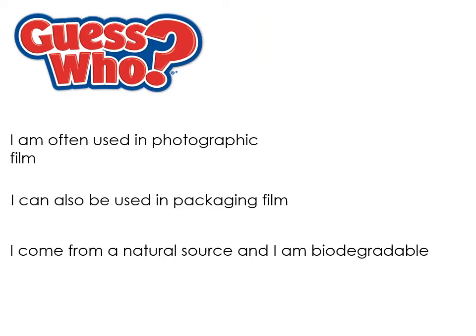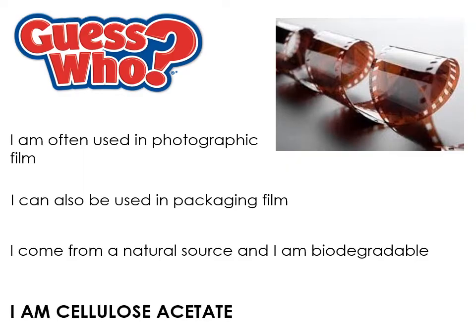The next material is often used in photographic film and packaging film. It comes from a natural source and is biodegradable — it's cellulose acetate, which actually comes from plants. It's a non-finite source and can biodegrade. If you had an exam question about packaging materials, cellulose acetate would be a good one to mention as it's far more sustainable than cling film, which is low density polyethylene from crude oil.